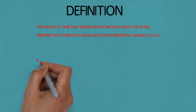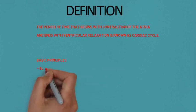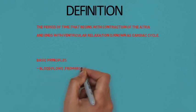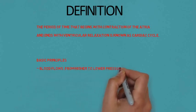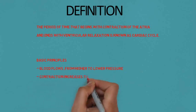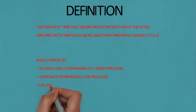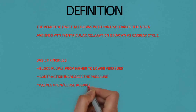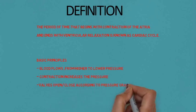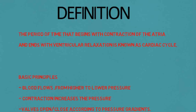We are going to discuss some of the basic principles of cardiac cycle. First, blood flows from higher to lower pressure. Contraction increases the pressure, and valves open or close according to pressure gradients.